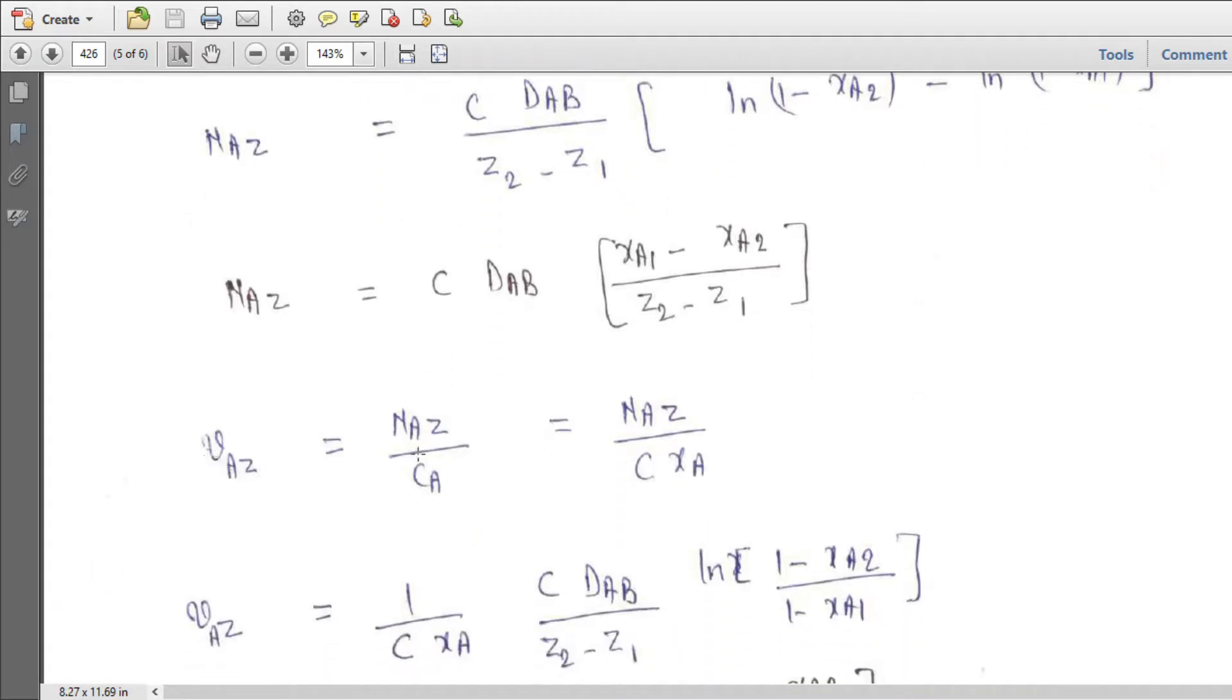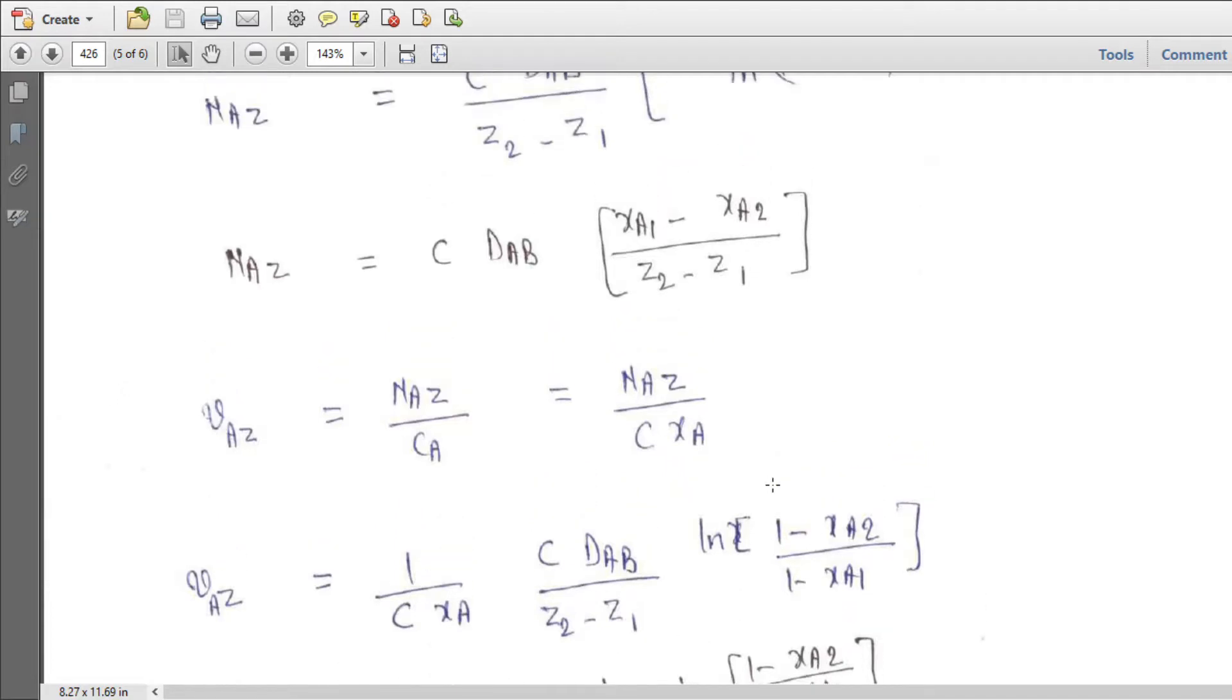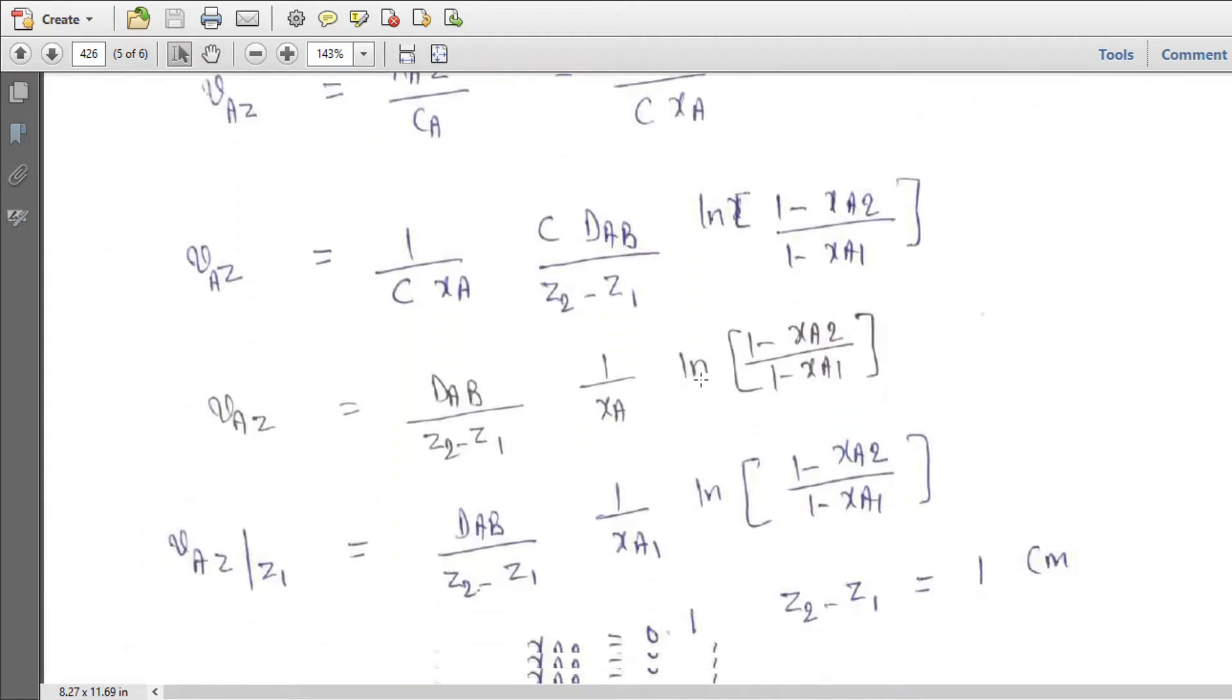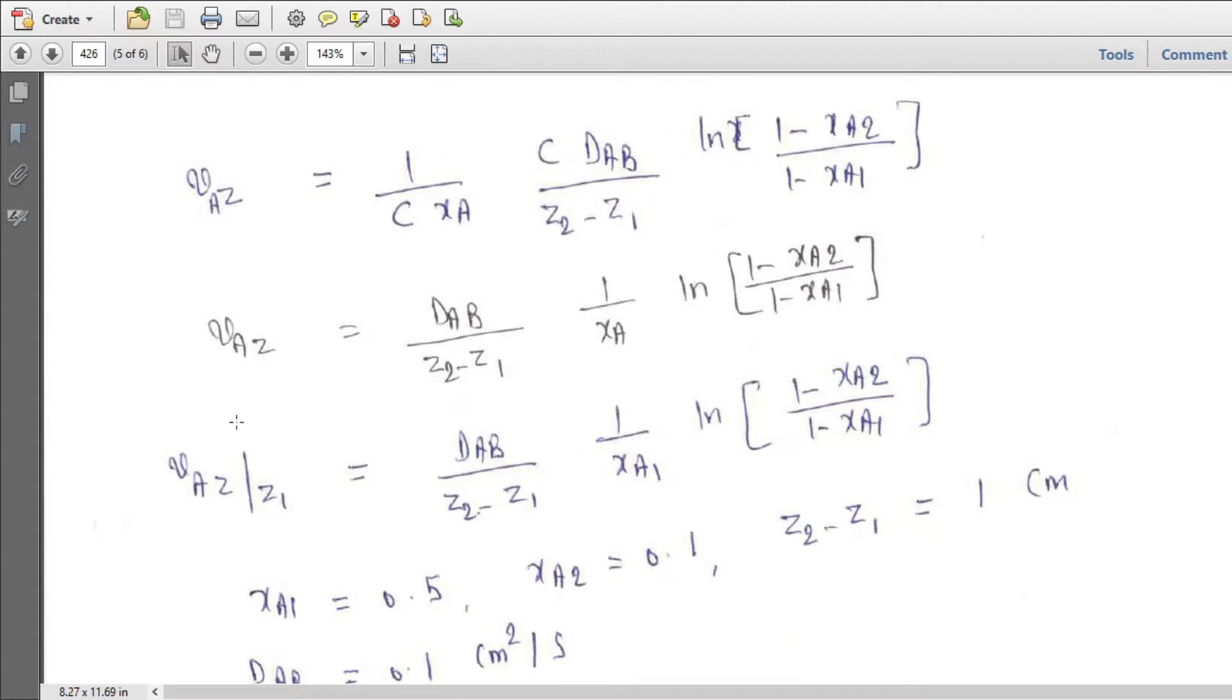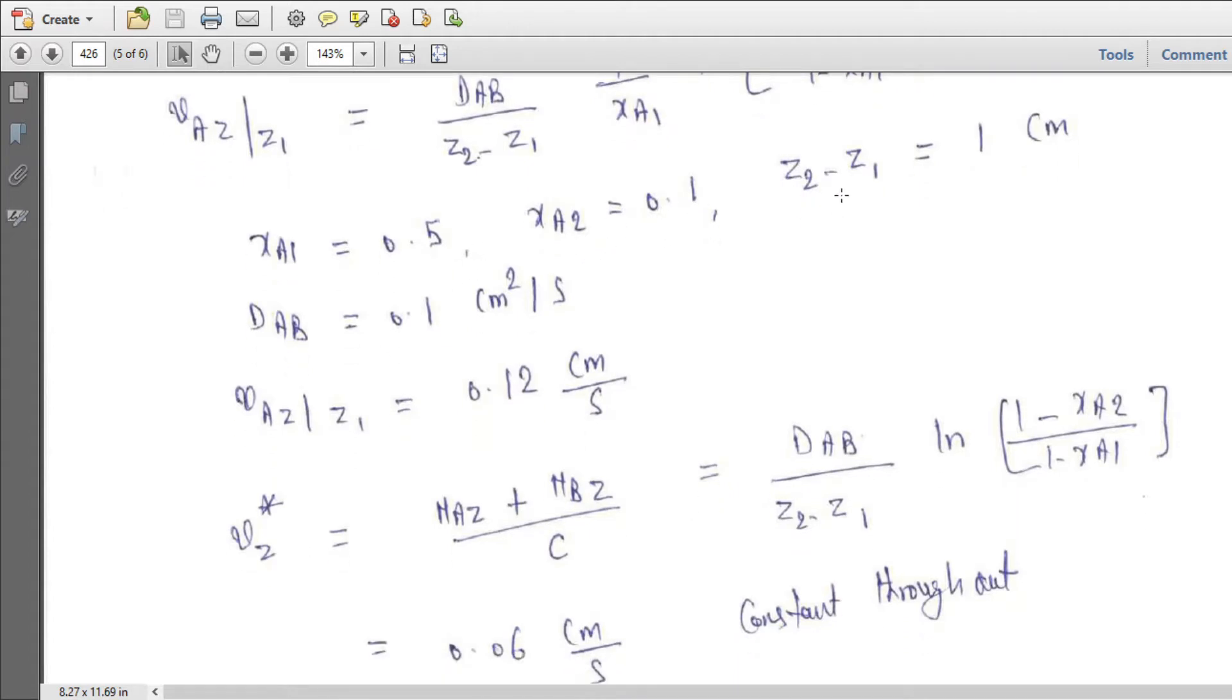So vZ is NAZ upon CA. CA is C into xA. So we can write vZ by substituting the expression of NAZ from here, the ln expression here. So we can substitute that here. So we will get this expression of vAZ. So vAZ at z equal to z1 equals DAB over z2 minus z1 times 1 over 1 minus xA1 times ln 1 minus xA2 over 1 minus xA1. Now we can substitute here typical values: xA1 0.5, xA2 0.1, z2 minus z1 1 centimeter, diffusivity AB is 0.1 centimeter squared per second. So vAZ can be calculated, 0.12 centimeter per second.